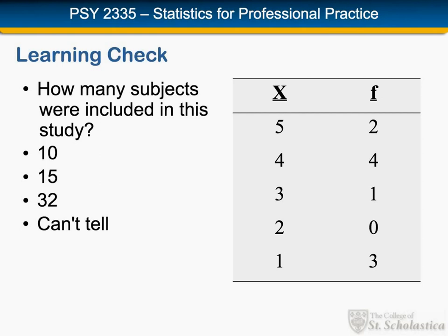Often people answer this question with 15, which you get by summing up each of the scores: 5 plus 4 plus 3 plus 2 plus 1. But these x-values are the actual scores, not the number of people. The correct answer is 10 — the number we get by adding up the frequency of each score: 2 plus 4 plus 1 plus 0 plus 3 equals 10. Every once in a while somebody multiplies the two and then adds things up, getting 32, but that's also incorrect.